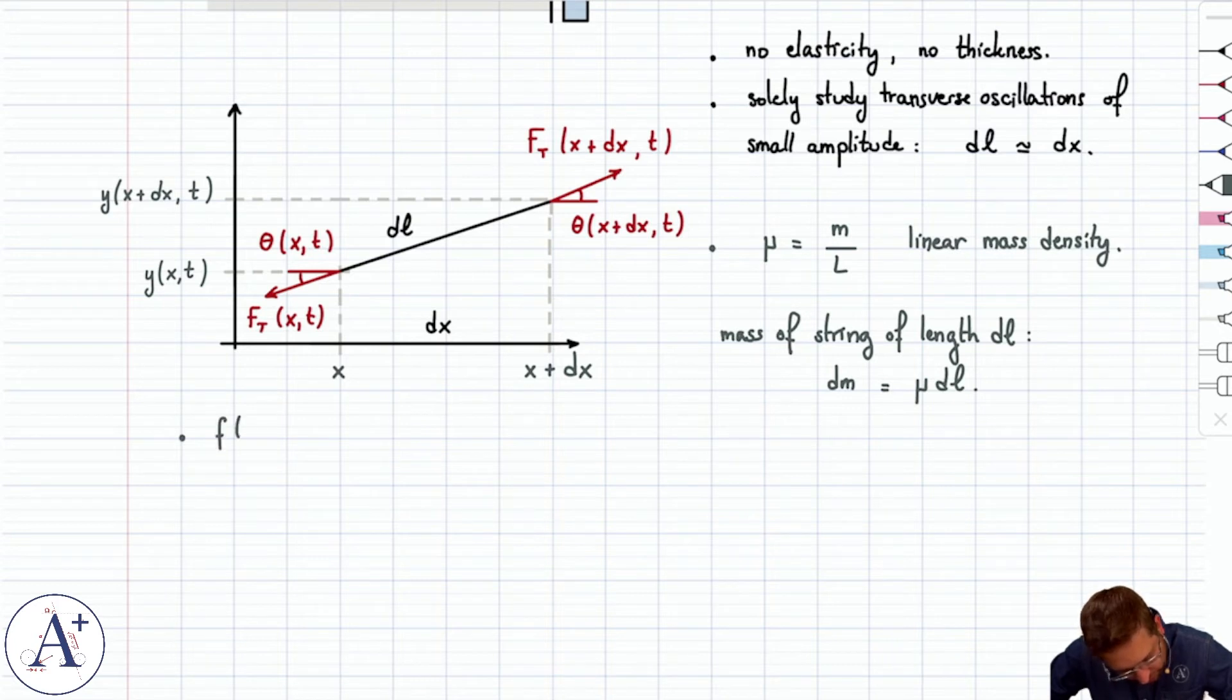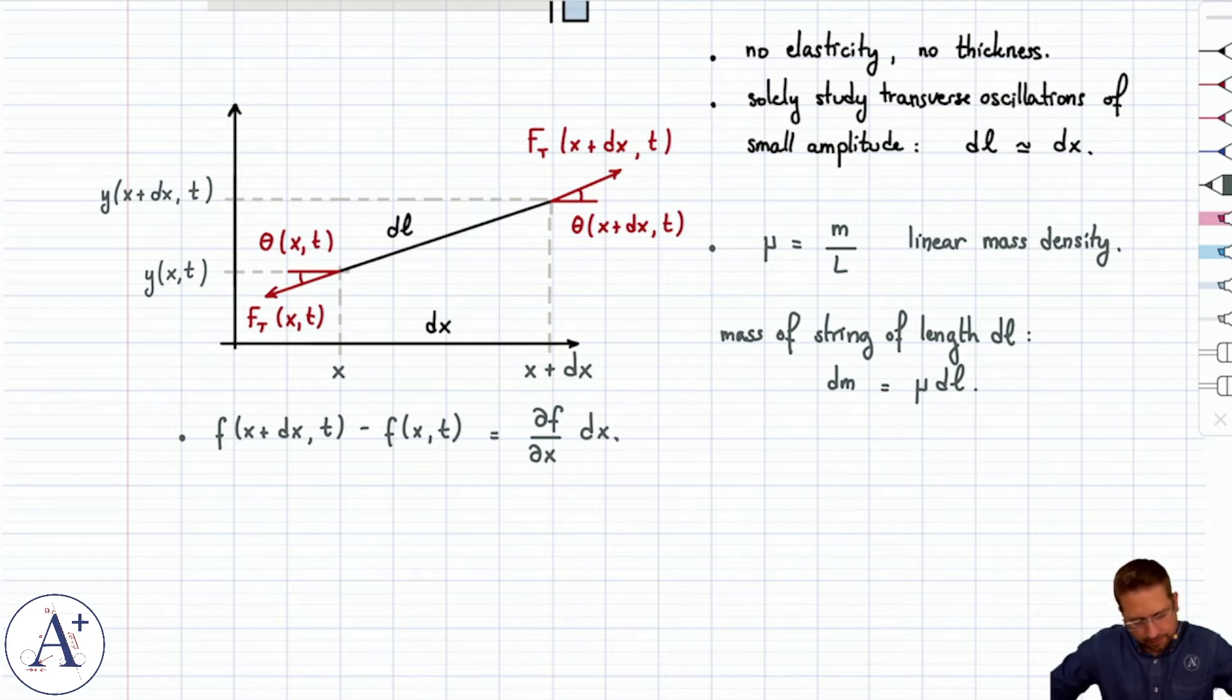Let's go over a couple other things. One is a quick reminder that if you have a function of two variables, f of x and t, and you write f of x plus dx, t minus f of x, t, that's actually the same thing as ∂f/∂x dx.